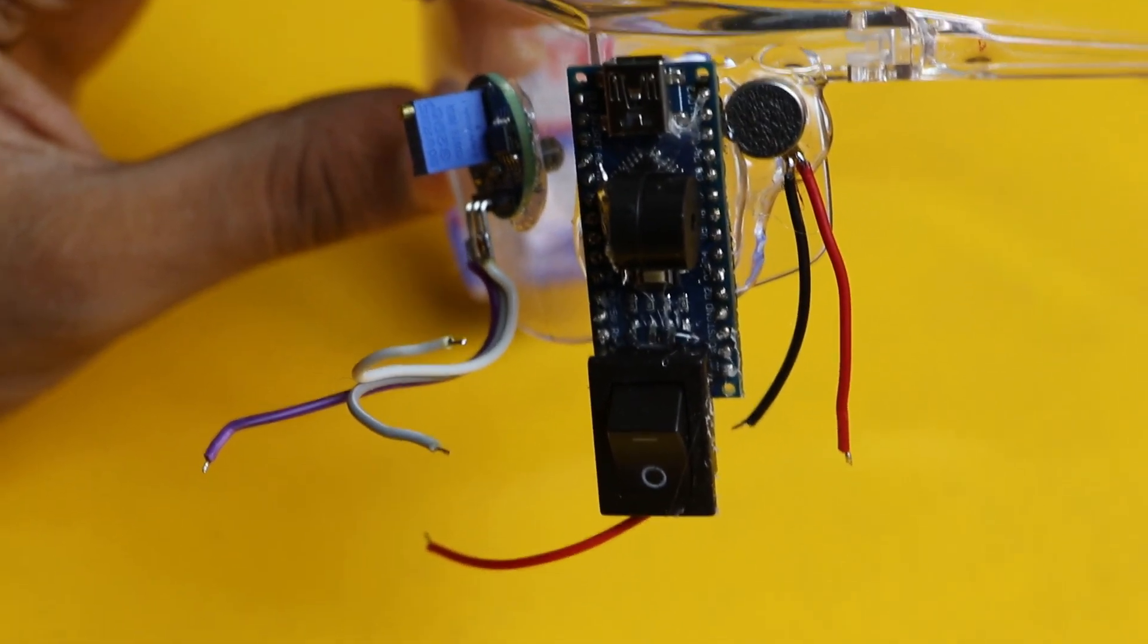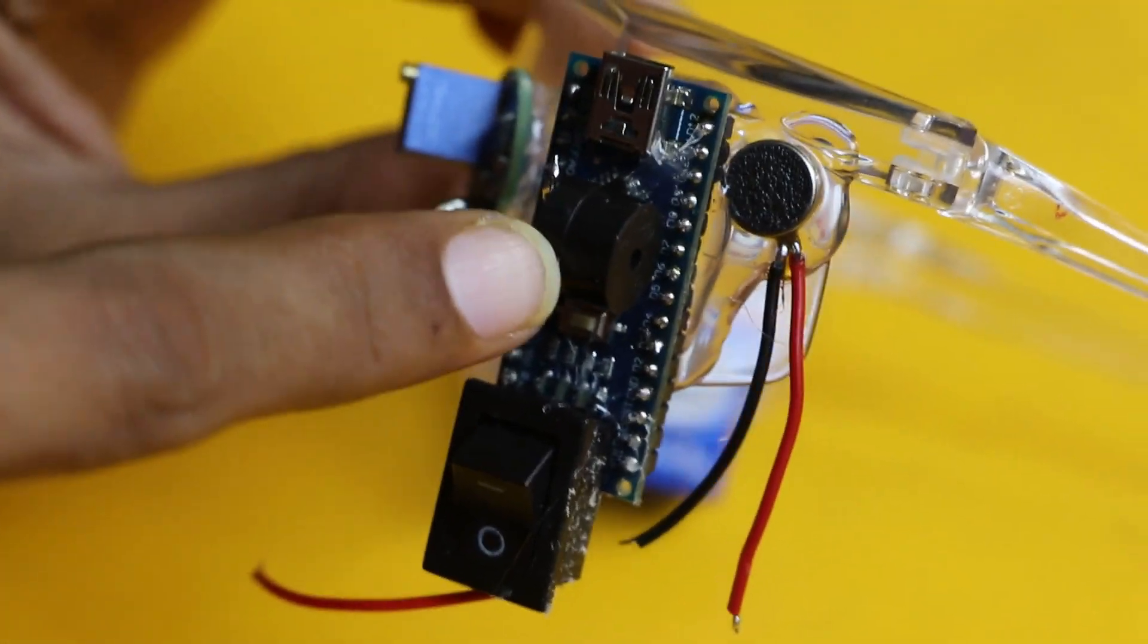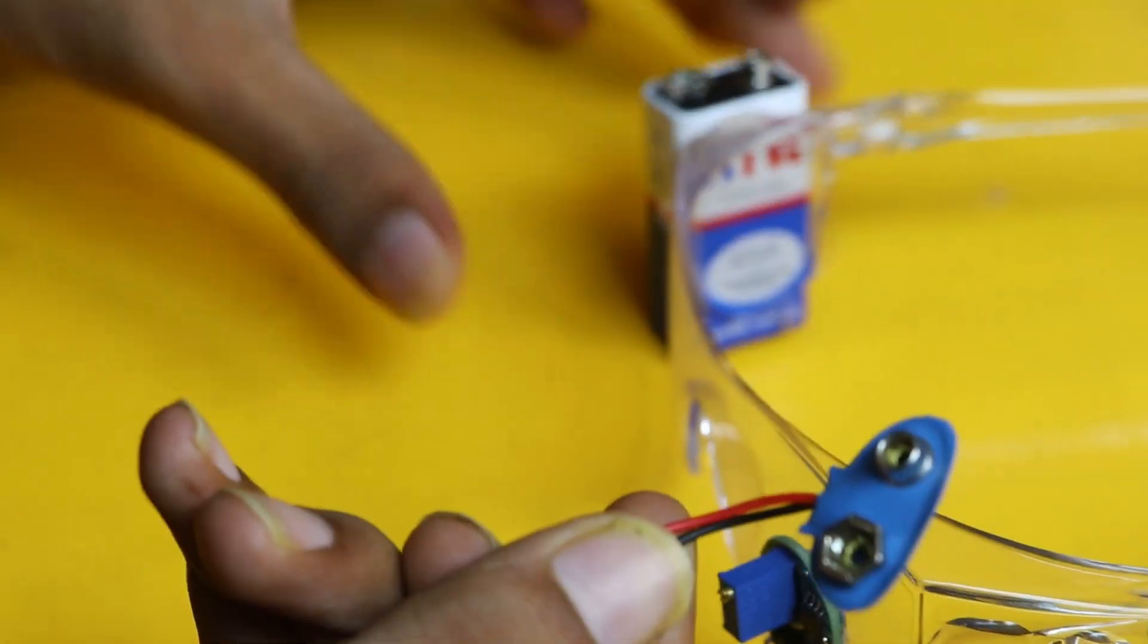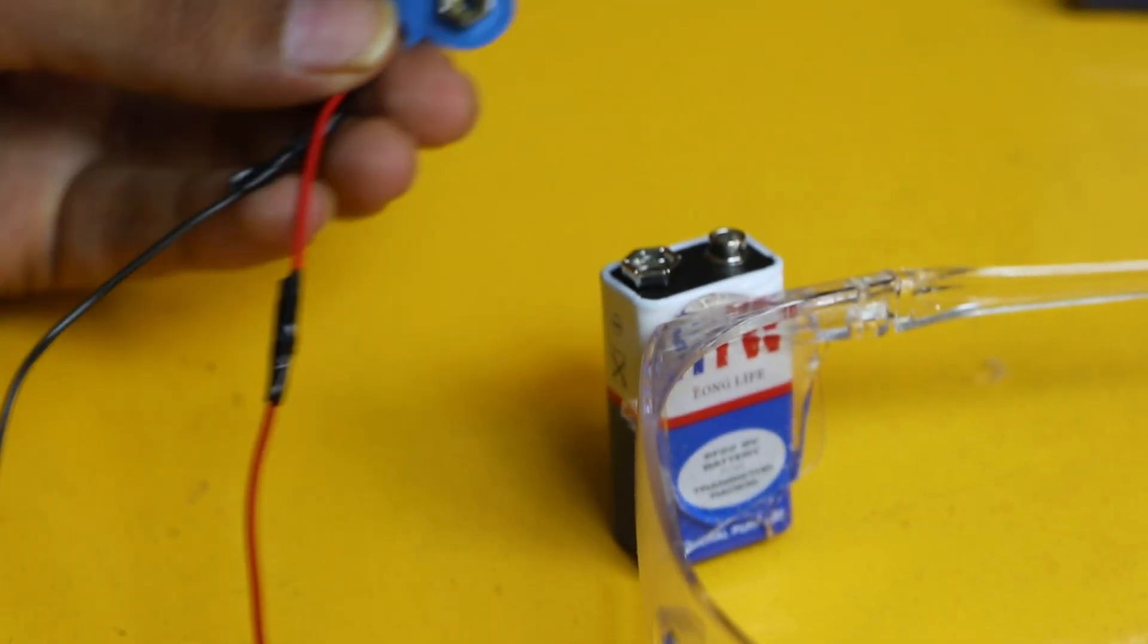Now you can see that all the main components we have placed on the goggle. This is the eye blink sensor, this is the SPST switch, this is vibration motor, buzzer, Arduino Nano, and this is the battery. All the main components we have placed. This is the battery cap. We are going to apply the battery cap on the battery so that we can take out power from the battery for the circuit. And then we will make the connections of the project.